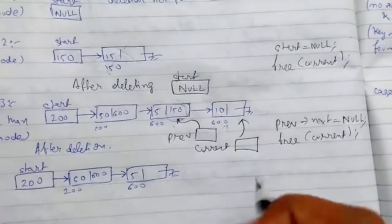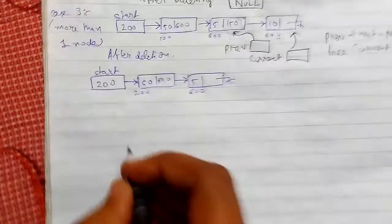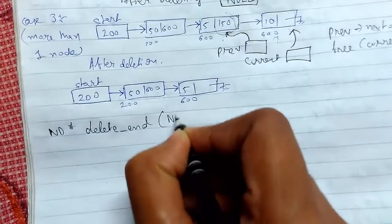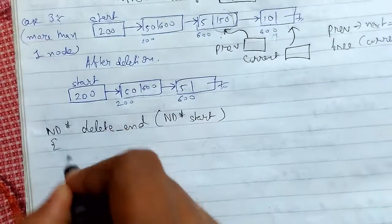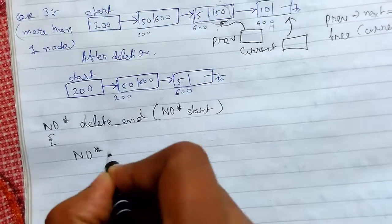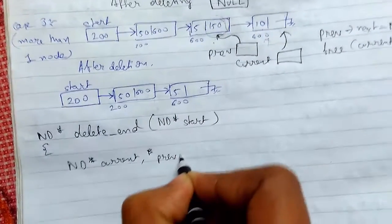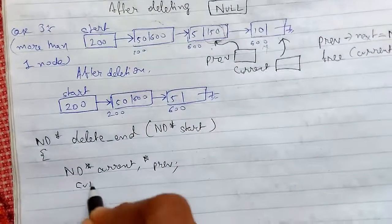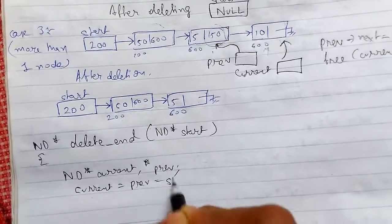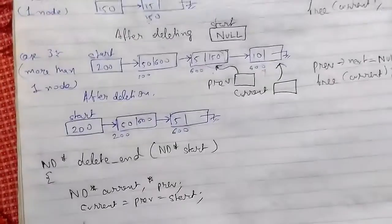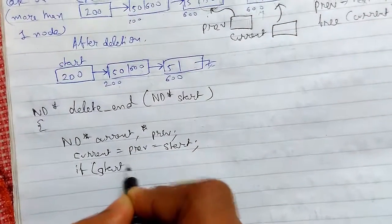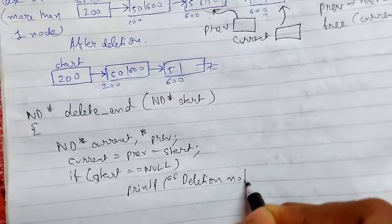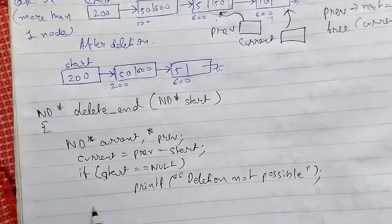Let me show you the code. I am writing a function called delete_end that takes start as a parameter. We need two variables: current and previous, both initialized to start — written as current equals prev equals start. For the first case, if start equals null, we print that deletion is not possible.